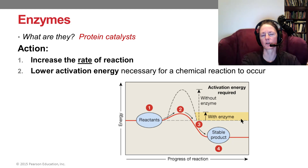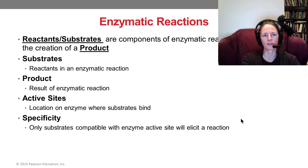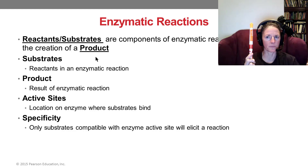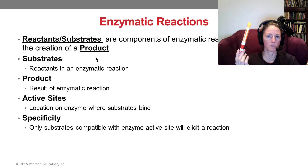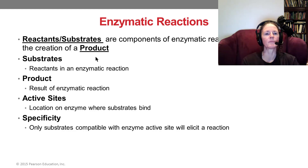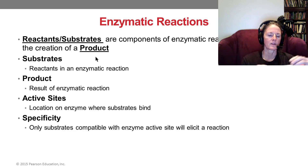Enzymes are things that help speed up a reaction. In a chemical reaction, we start with reactants and end with products — either an anabolic reaction that puts things together or a catabolic reaction that breaks them apart. When we use an enzyme, the reactants are called substrates, and the substrates bind to what we call the active site of the enzyme.